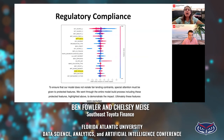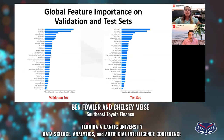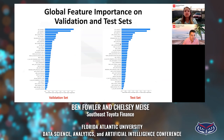SHAP plots can be great at allowing us to globally understand how important our features are in the model. Here I'm showing the global SHAP importance plots both in the validation and the test set. Generally, these two plots are very similar. There are some slight deviations in the order — such as amount down payment being below SKDPD default on the test set but above on the validation set — but generally these values track very similarly across the two data sets.